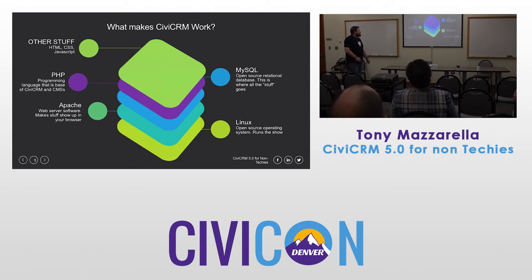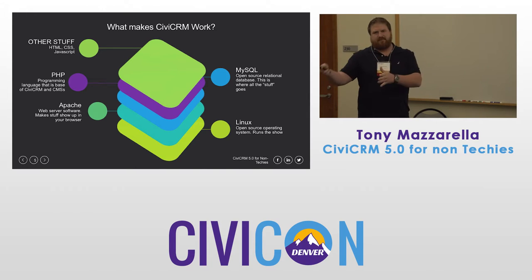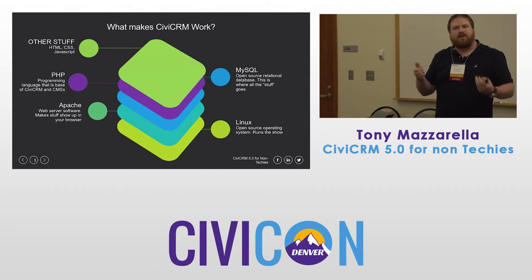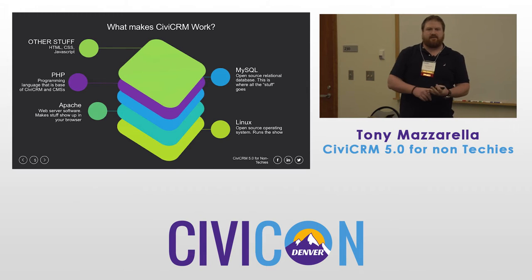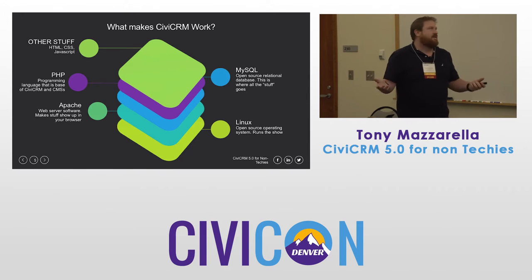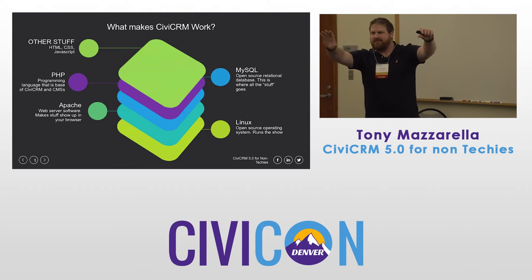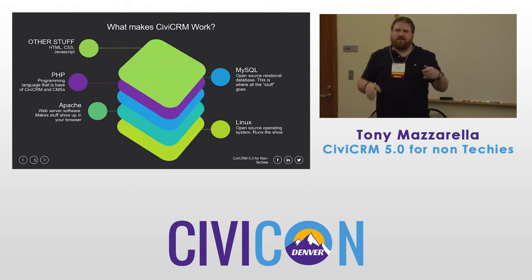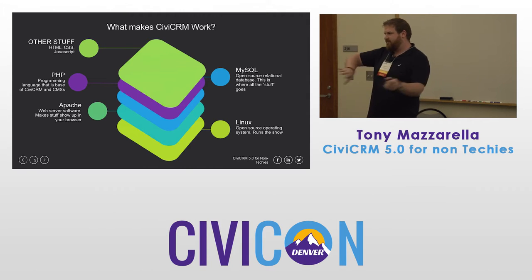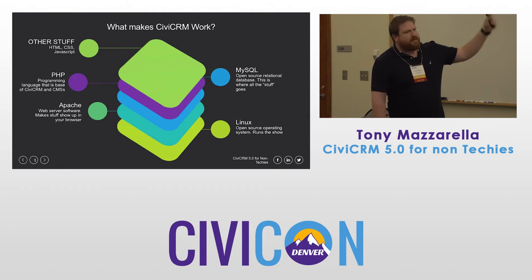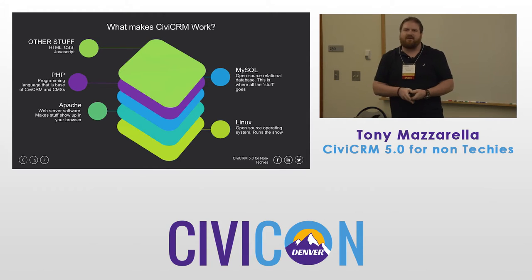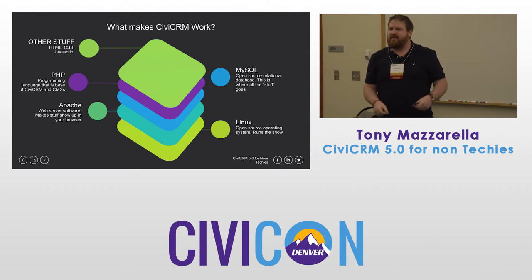What makes CiviCRM work? The reason we're getting into these is because they sort of go into the changes we want to make and what we can do better. CiviCRM, like a lot of open source projects, is built on a LAMP stack — Linux, Apache, PHP, and MySQL. Linux is the open source operating system that runs the server. Apache is the web server — that's what makes stuff show up on your screen. PHP is the programming language that's the base our system runs on. MySQL is the database — that's where all the data goes and is stored. And on top, there's HTML, CSS, and JavaScript — that's what makes it do stuff when you're using it, the front-facing layer.